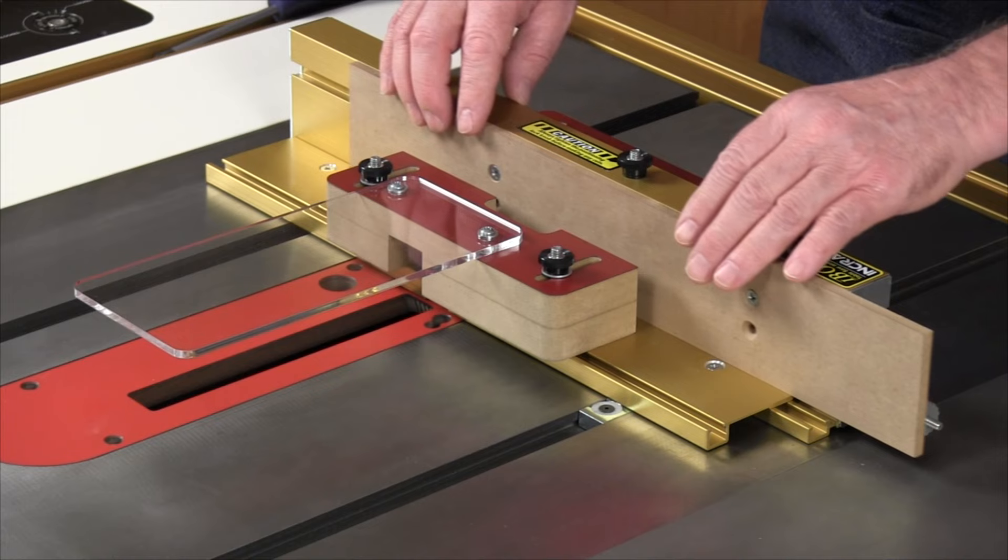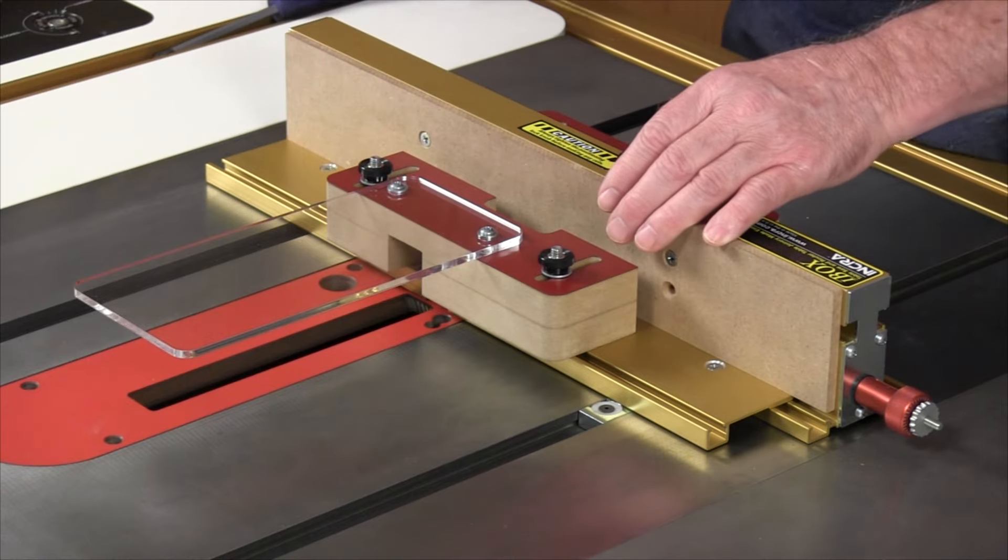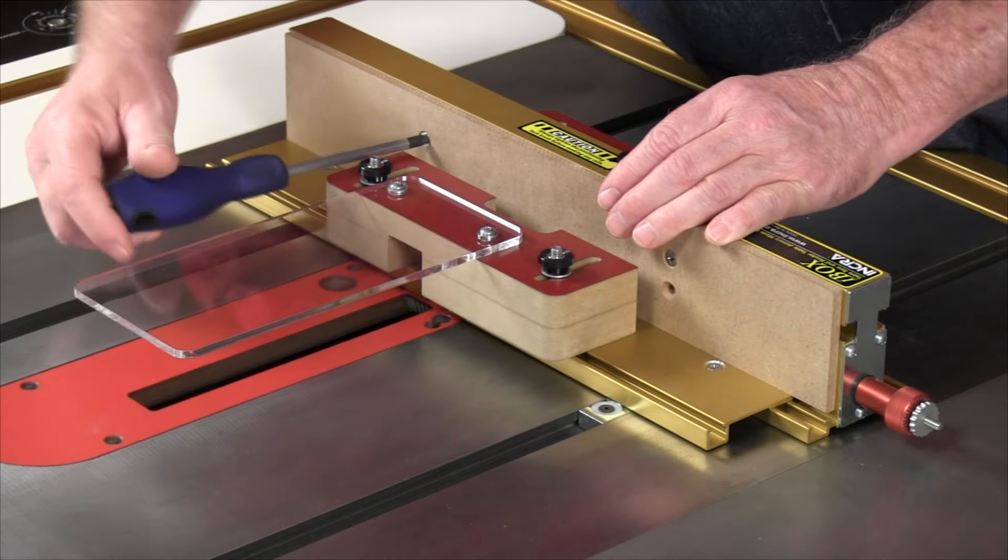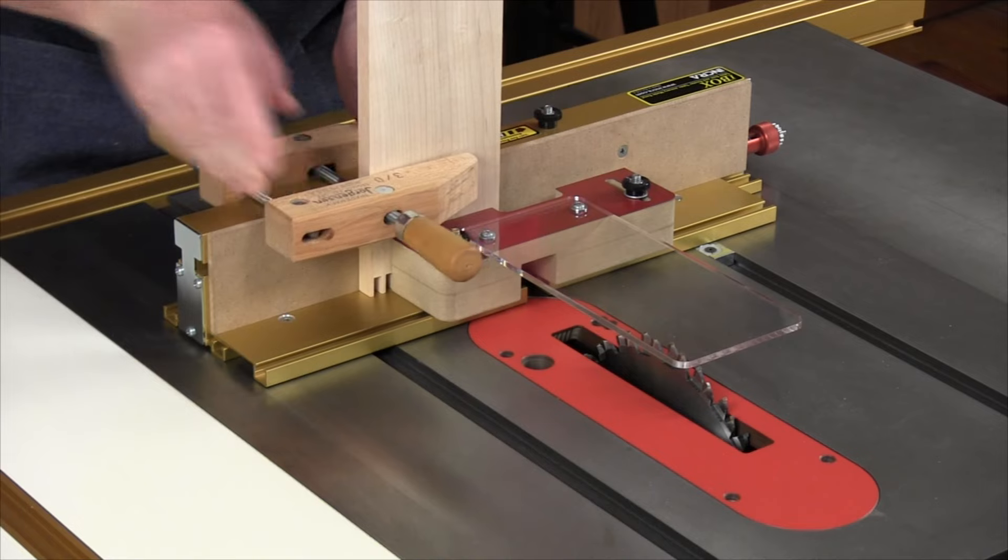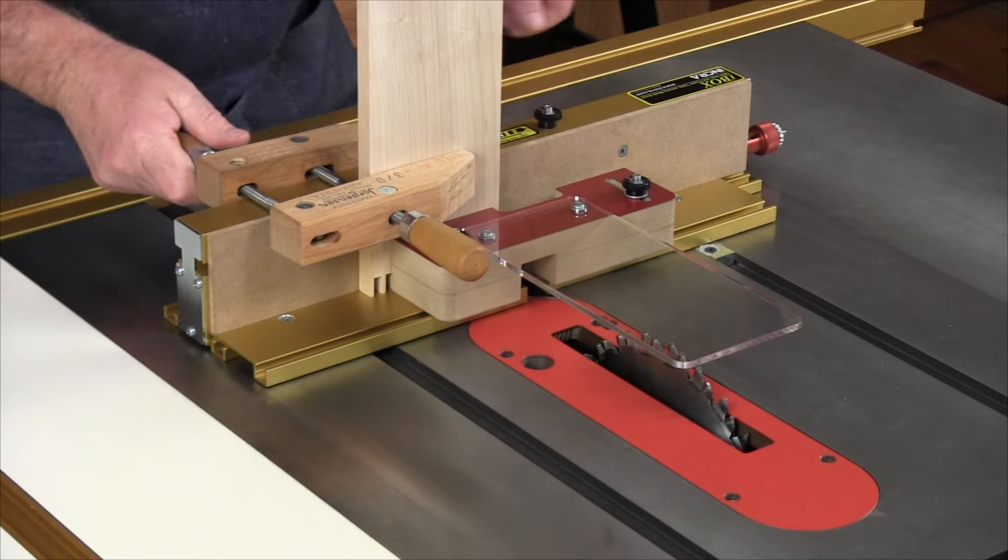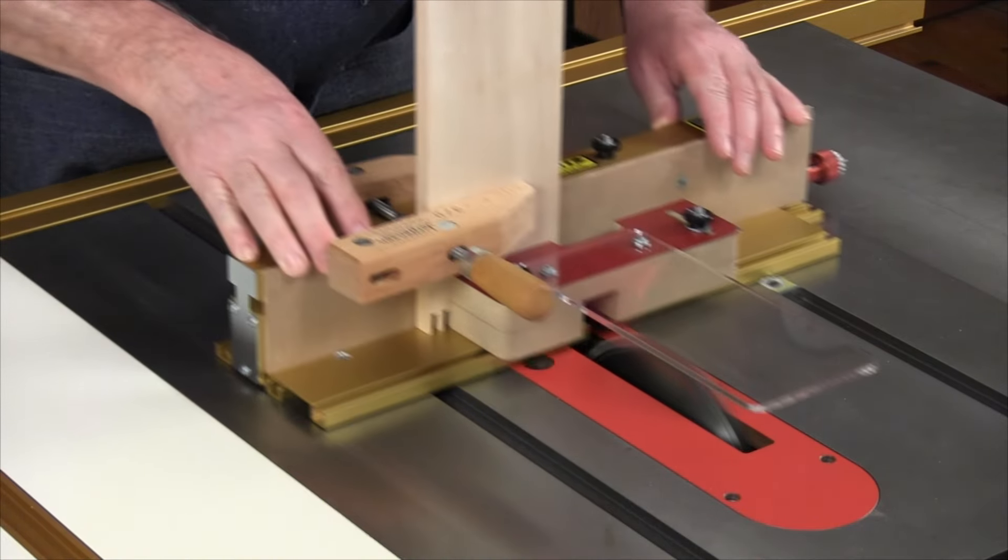T-slots provide an easy means of attaching and adjusting the included backing board for tear-out free cutting, and the wide flat top of the fence was designed to provide support for a wooden handscrew clamp during cutting operations.